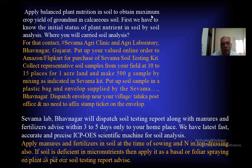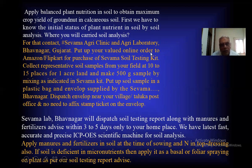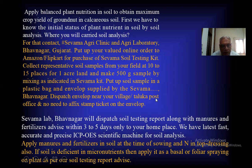Apply balanced plant nutrition in soil to obtain maximum crop yield of groundnut in calcareous soil. First, we have to know the initial status of plant nutrients in soil by soil analysis. For that, you are requested to contact Sivama Agri-Clinic and Agri-Laboratory, Bhavnagar, Gujarat. You can also place an online order on Amazon or Flipkart for the Sivama soil testing kit. Collect a representative soil sample from your field at 10 to 20 places for one acre of land and make a 500 gram sample by mixing as indicated in the Sivama kit. Put the soil sample in the plastic bag and envelope supplied by Sivama, Bhavnagar, and dispatch via your village post office — no postage stamp required. Sivama Lab Bhavnagar will display the soil testing report along with manure and fertilizer advice within 3 to 5 days.